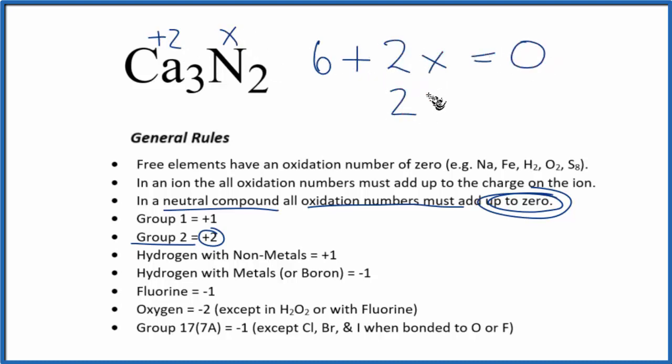Subtract 6 from both sides, we get 2x equals -6. Divide both sides by 2, and x will equal -3. So once again, the oxidation state on the nitrogen will be -3. Each nitrogen will have an oxidation number of -3.